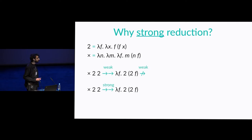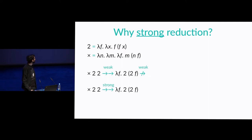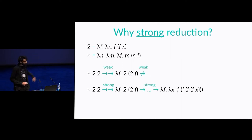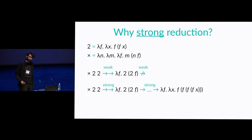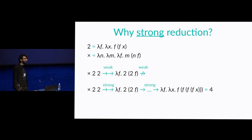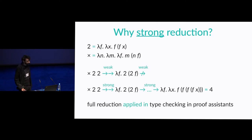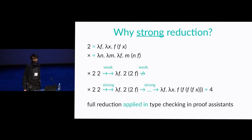We can do the same with strong reduction, but strong reduction can go under lambda. With some extra steps under lambda f, we can normalize the whole term and obtain a result that is equal to Church numeral four. More importantly, full reduction is applied in type checking in proof assistants.